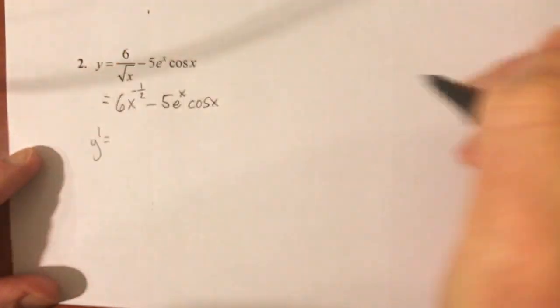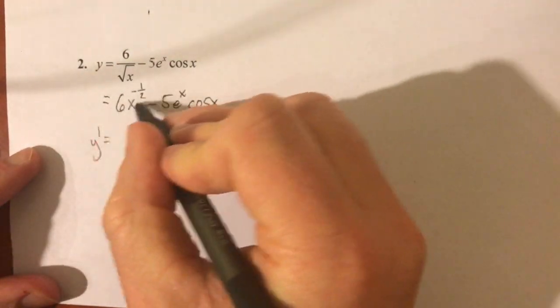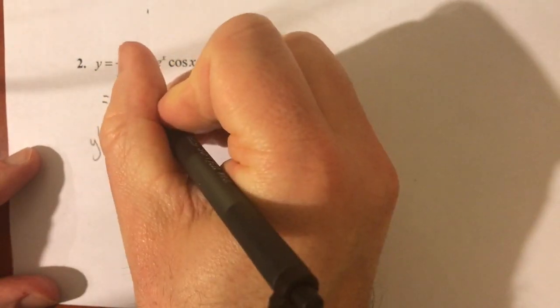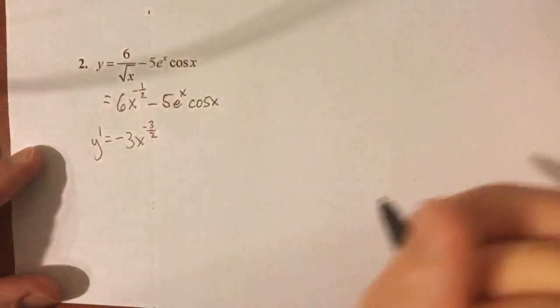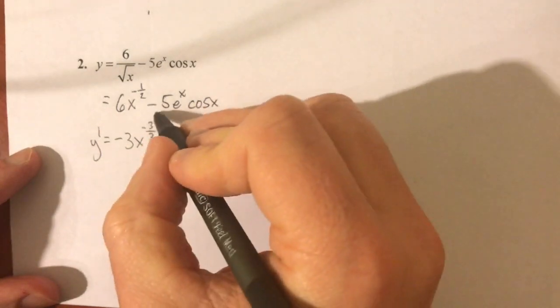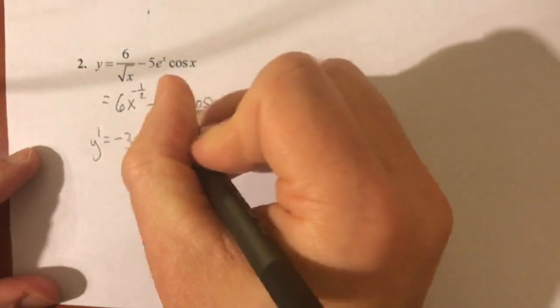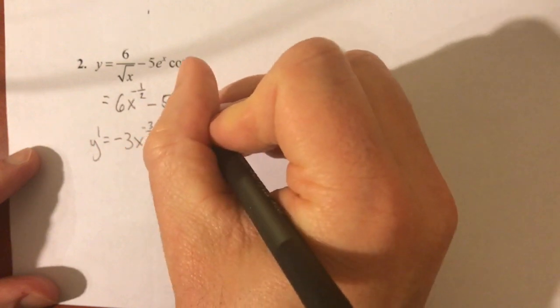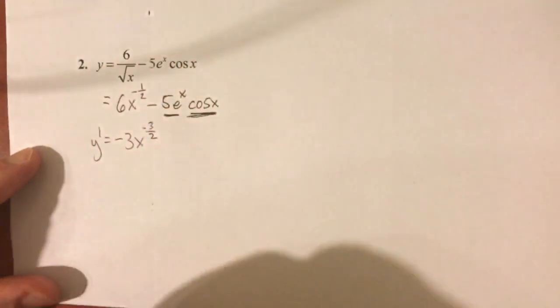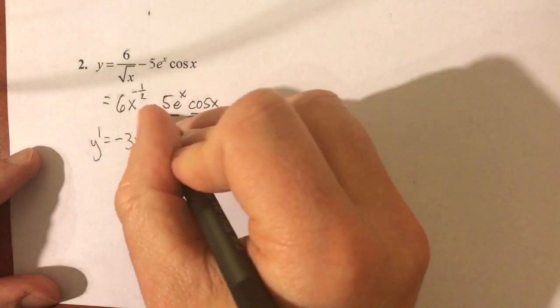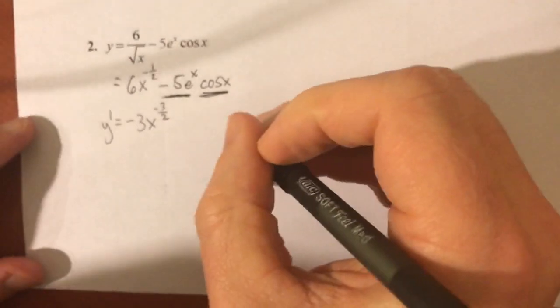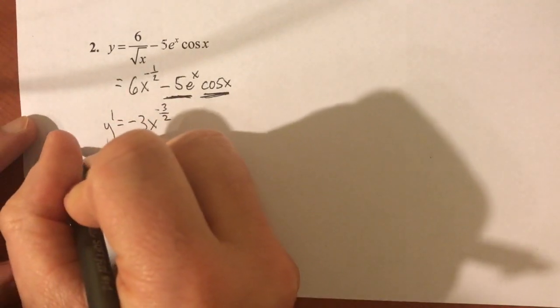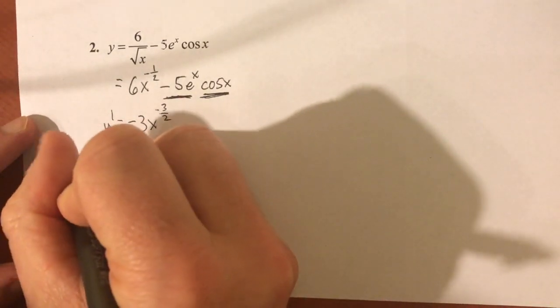And we're getting to the point where you might feel like you can do some of these things in your head and just launch right into the derivative. And we're getting to the point where I'm more comfortable letting you do that. But I still say, don't rush and make careless mistakes. So here's our function, and we want to differentiate this. So y prime or dy dx, I'll go with y prime this time, is, this is now ready for the power rule. Negative 1 half times 6, negative 3, x to the subtract 1, negative 1 half minus 1 is negative 3 halves. I'll fix that in a minute.